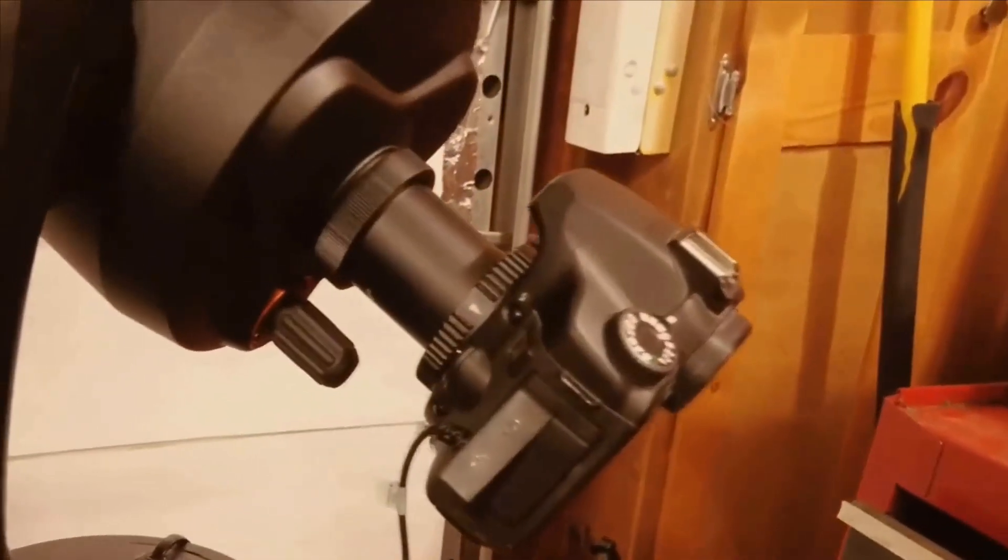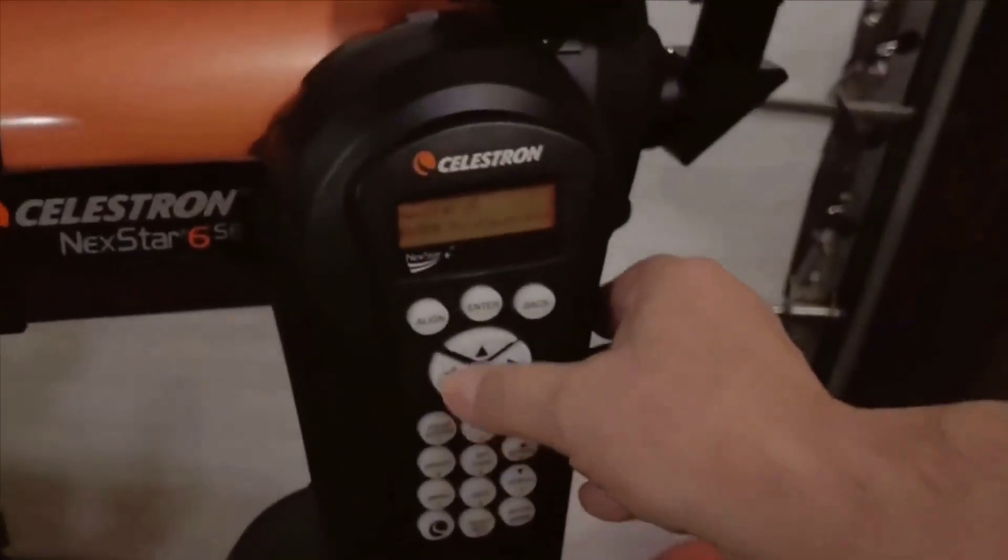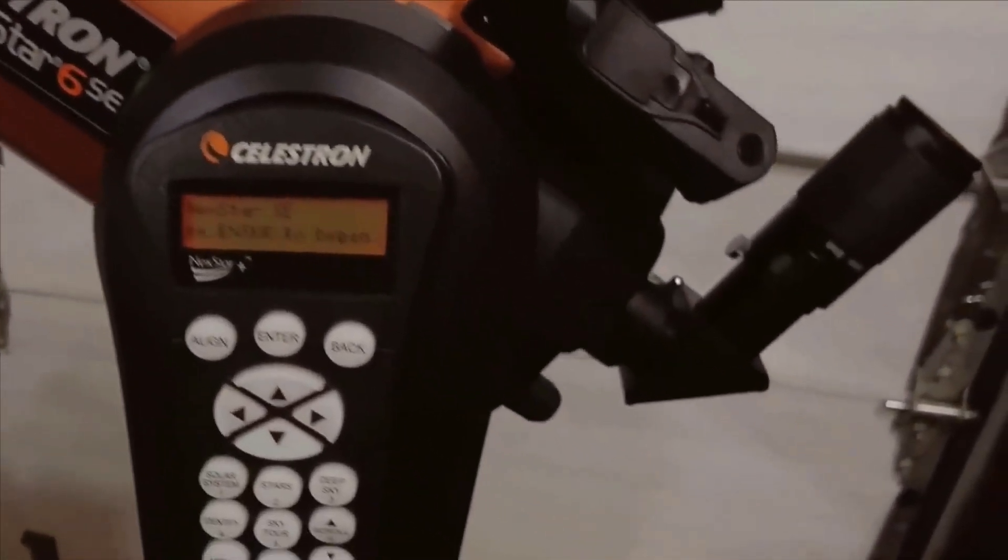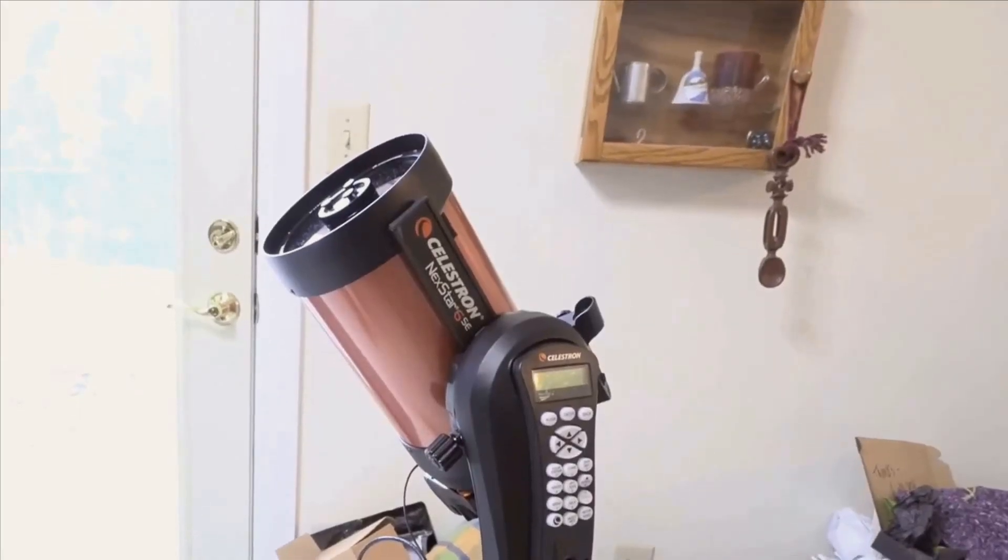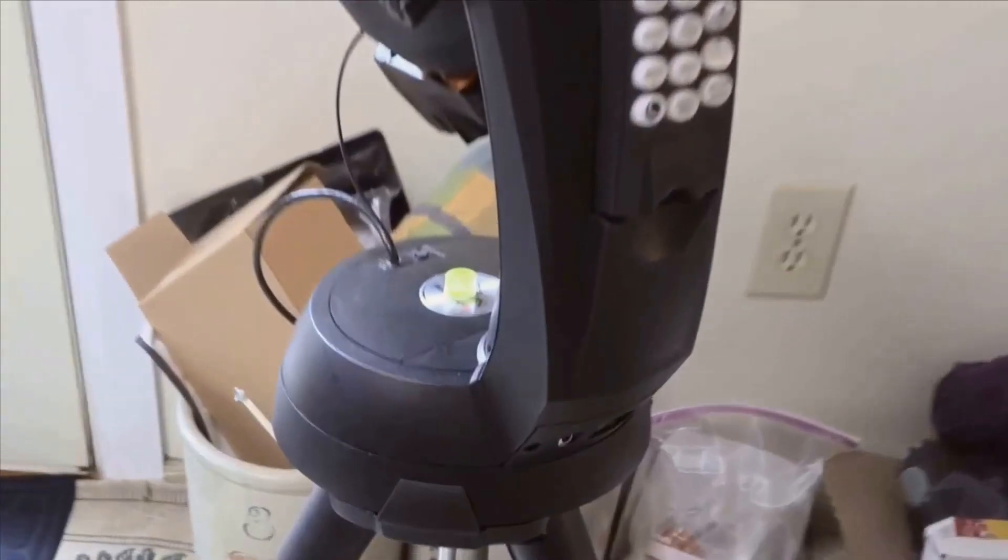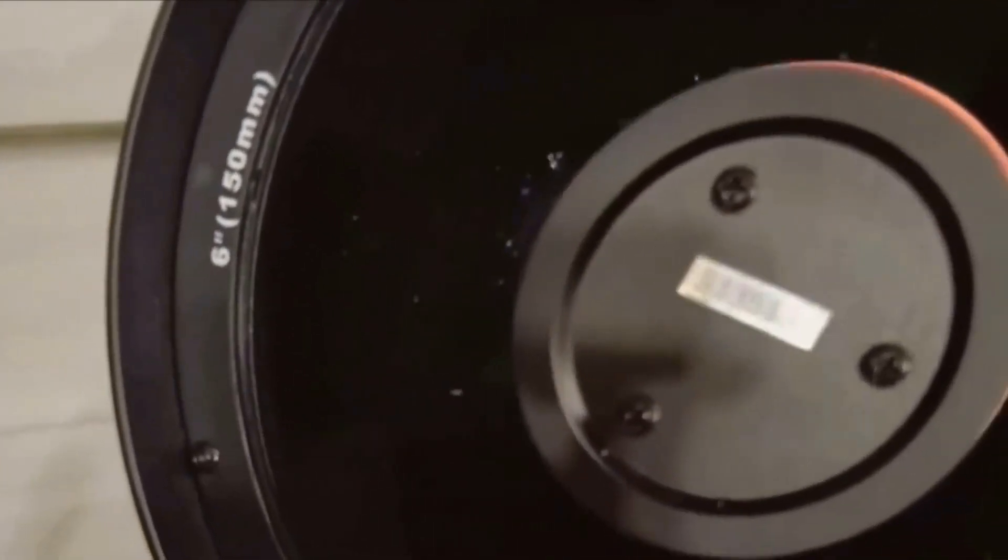Setting up the Nexstar 6SE is a breeze. I assembled the telescope myself and it took me only about 10 to 15 minutes. The instructions were clear and all the parts fit together seamlessly. Once you have it set up, the built-in SkyAlign technology helps you align the telescope quickly and accurately. You just have to center three bright objects in the eyepiece and the telescope does the rest. It's a surprisingly quick process and it was up and running in no time.